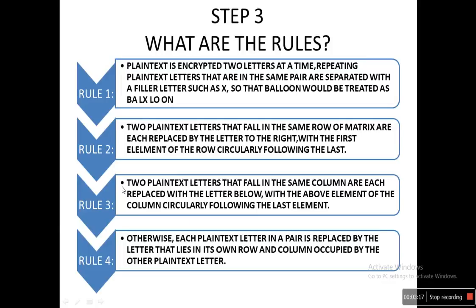Step 3: the rules for encrypting and decrypting with Playfair. Rule 1: plain text is encrypted two letters at a time. Repeating plain text letters in the same pair are separated with a filler letter such as X. For example, with the word 'balloon': B-A is the first pair, but L-L are repeating, so we insert X to get B-A, L-X, L-O, O-N. This is how we group letters into pairs and handle repeating letters with a filler.